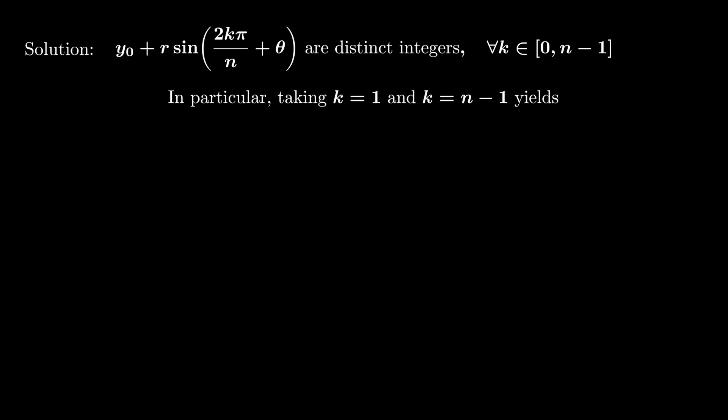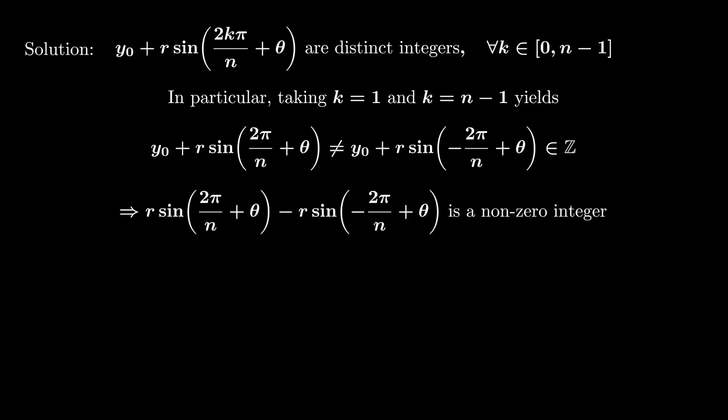First, we could remove the shifting parameter by taking a difference between the vertices. In particular, if we take the point k equals 1 and the point k equals n minus 1, they provide different integers. This means r sin(2π/n + θ) - r sin(-2π/n + θ) is a non-zero integer.